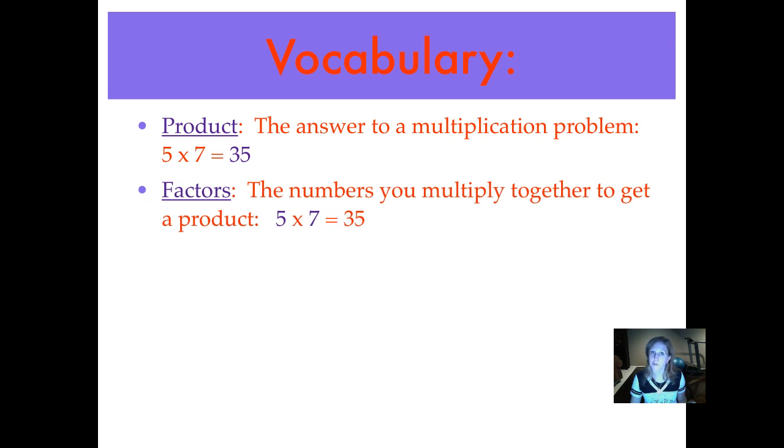Factors are numbers you multiply together to get a product. So in the equation 5 times 7 is 35, 5 and 7 are factors of 35.